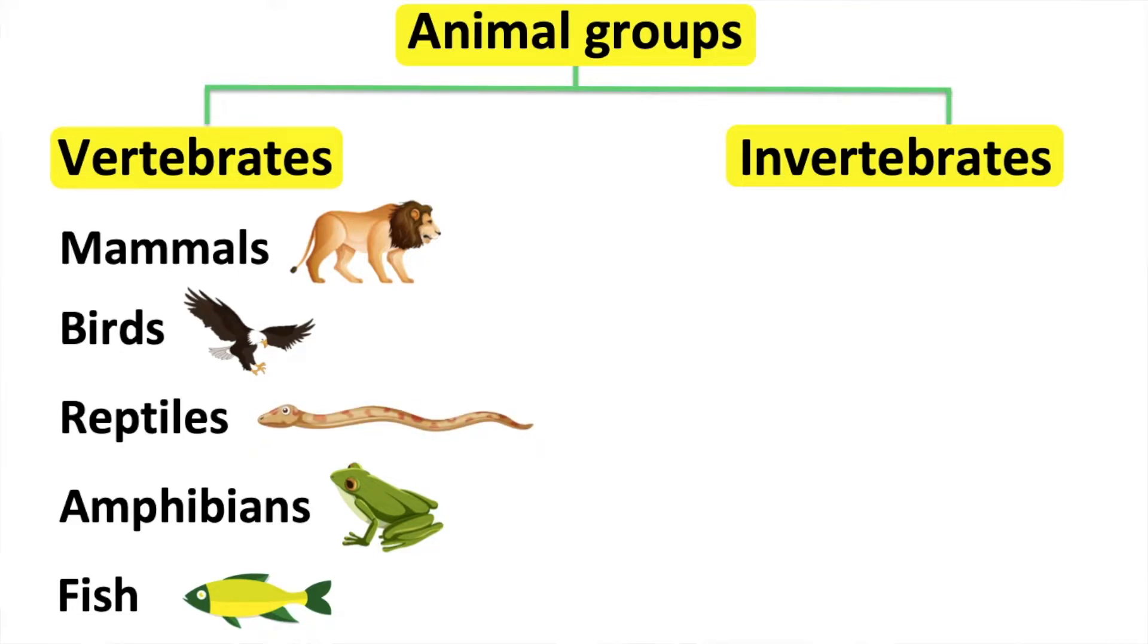Reptiles have scales. They use their lungs to breathe. Reptiles also lay eggs and their body temperature changes. Therefore, they are cold-blooded animals. For example, a snake.